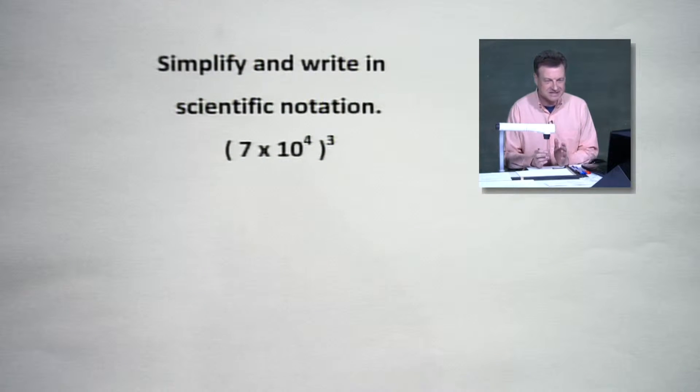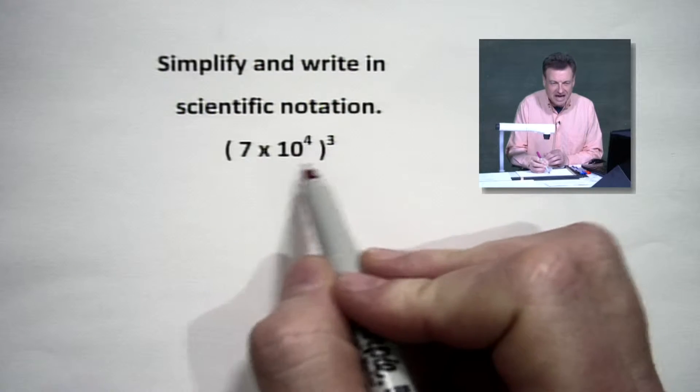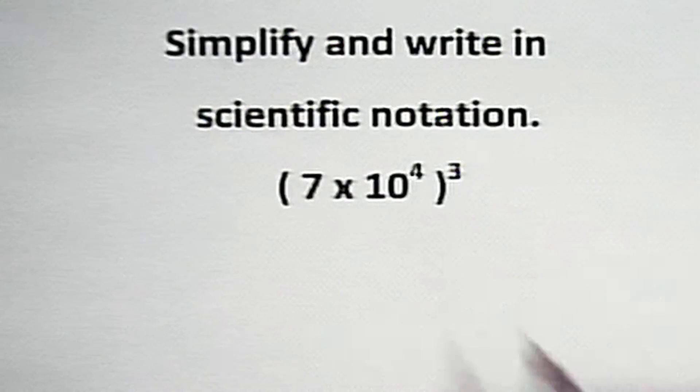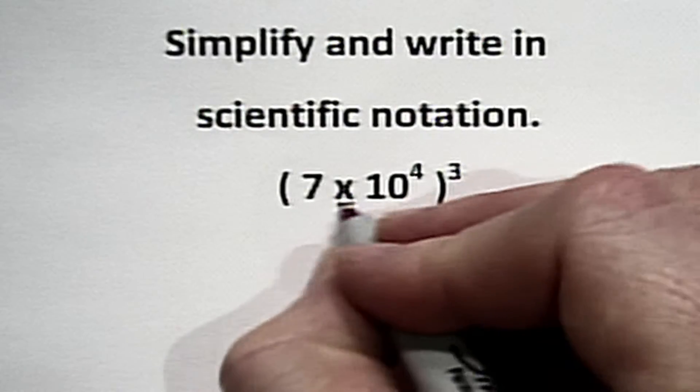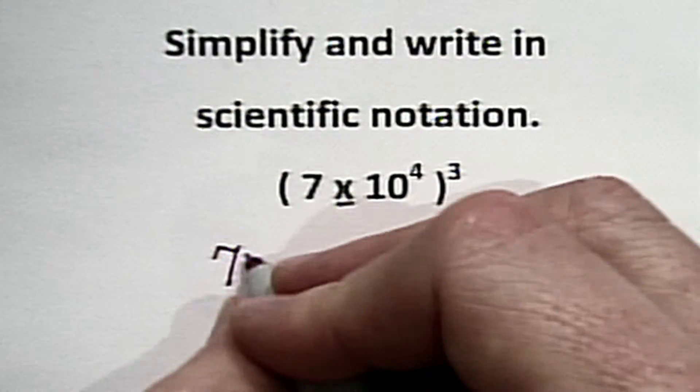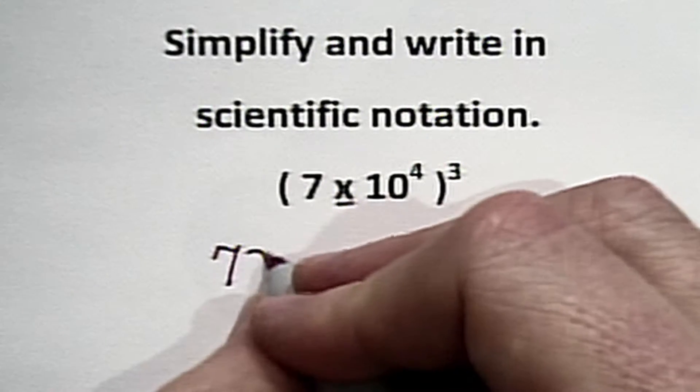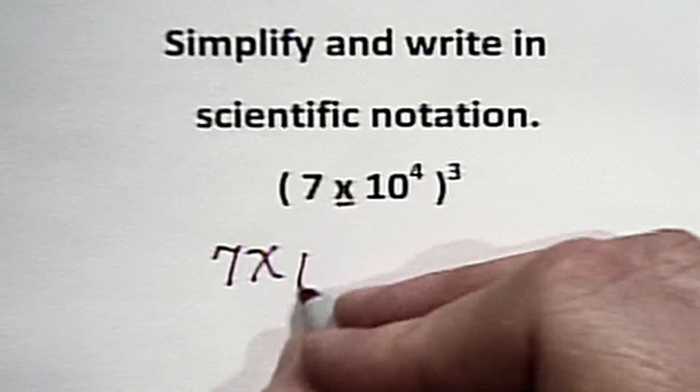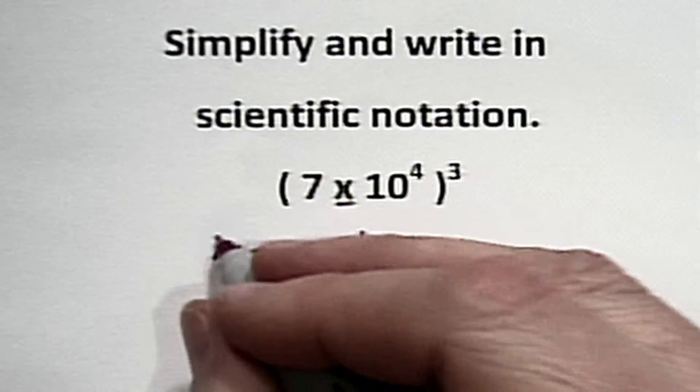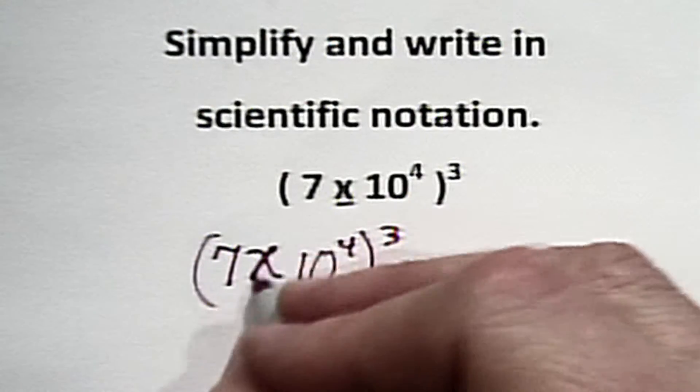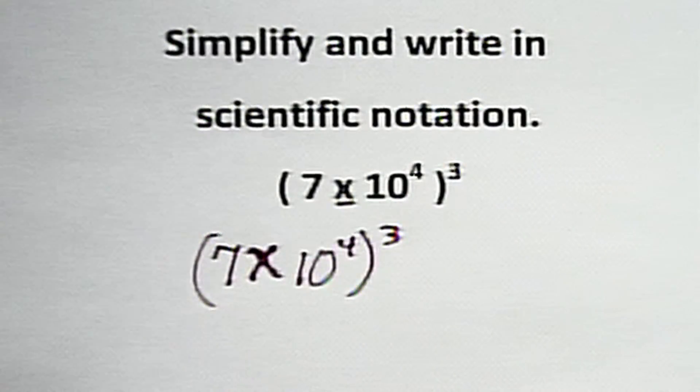Which is the same thing as taking this parenthesis times itself three times. So what's really going on here, because this is multiplication, that's a big deal. So let's take a look at this. We got times ten to the fourth and we're taking all of that to the third. Now that's not an X, that's just a times symbol. It's a fancy looking one, isn't it?